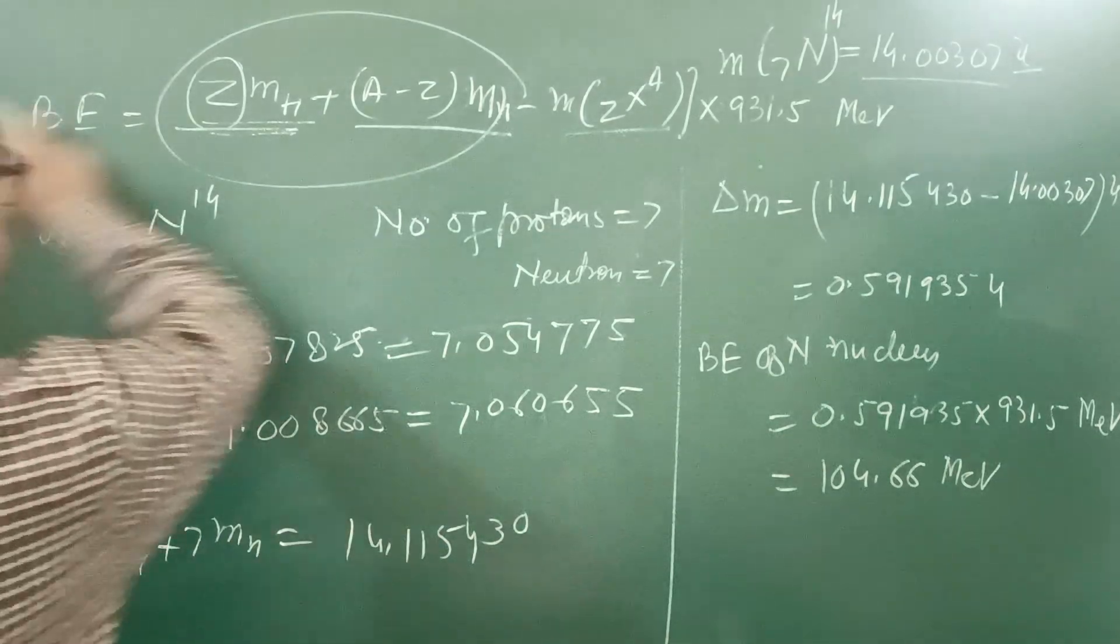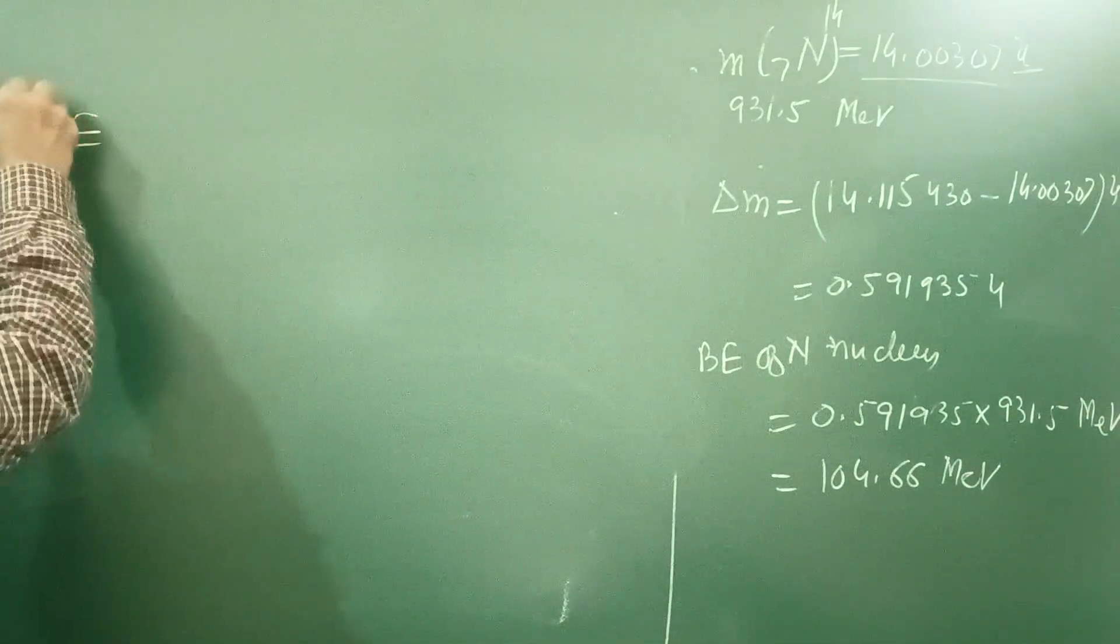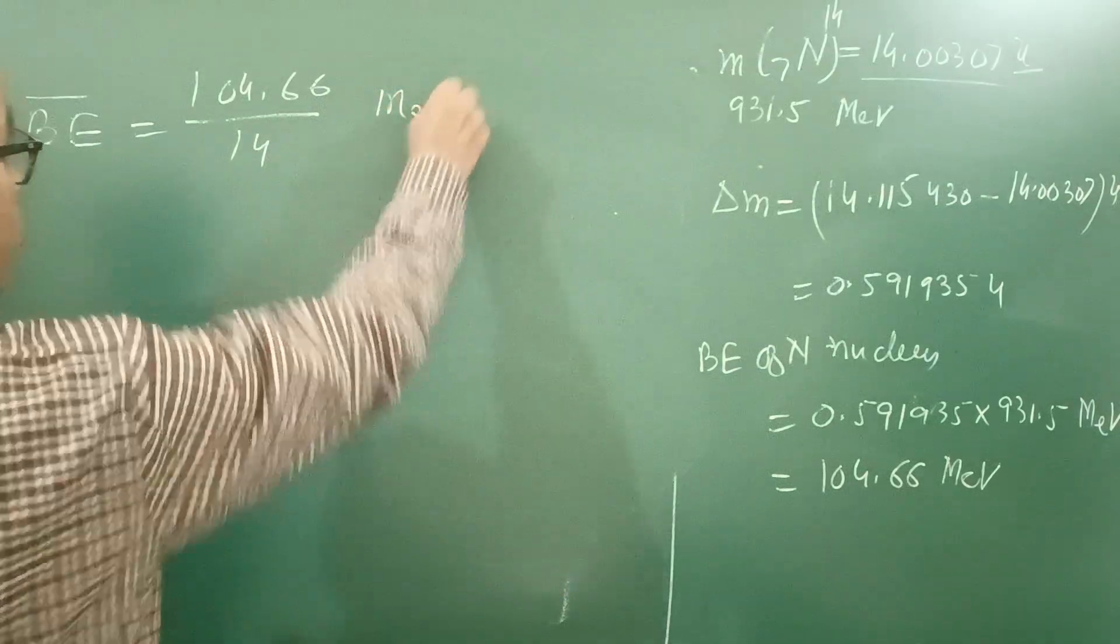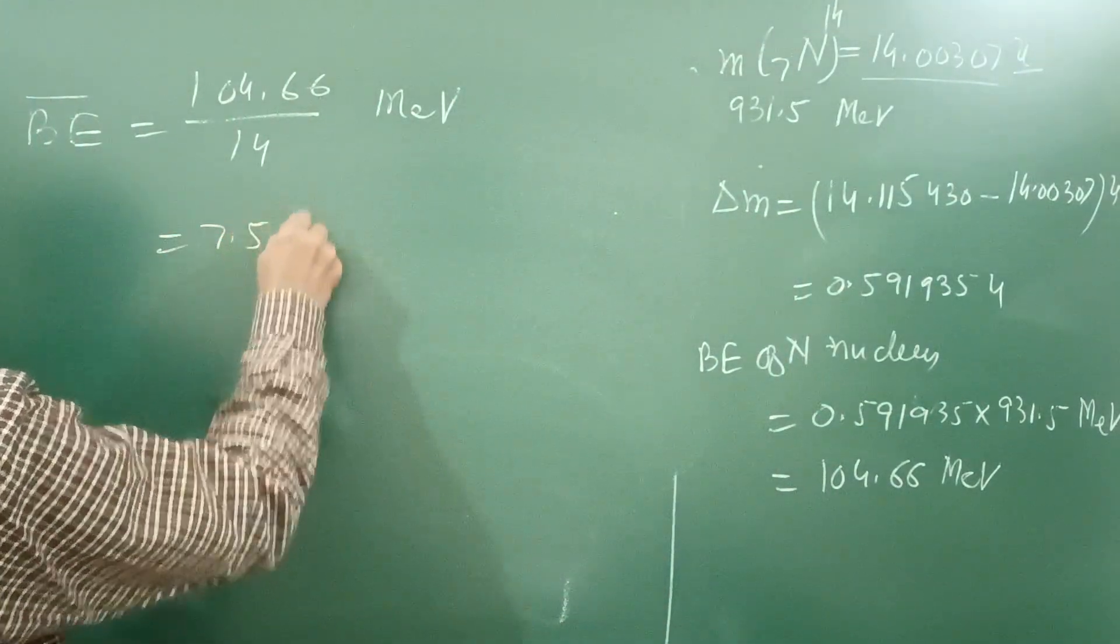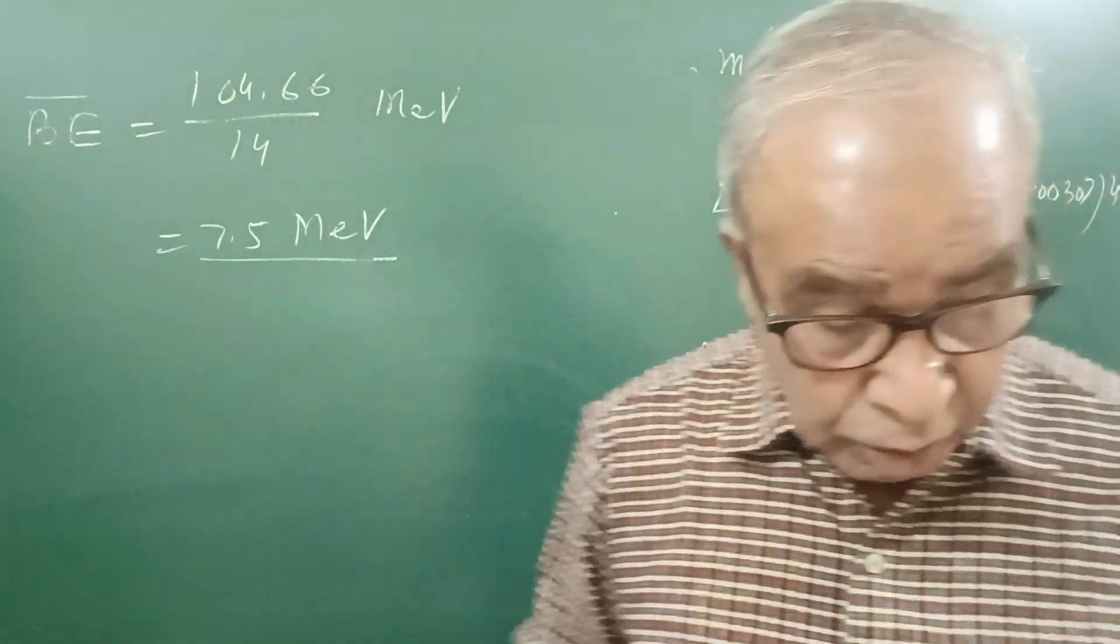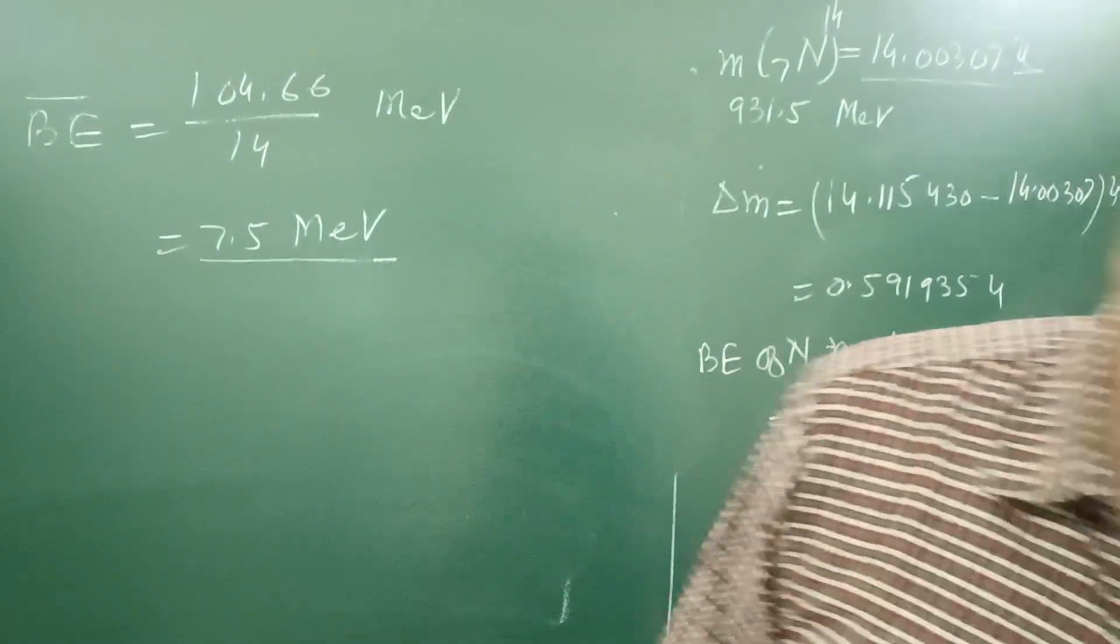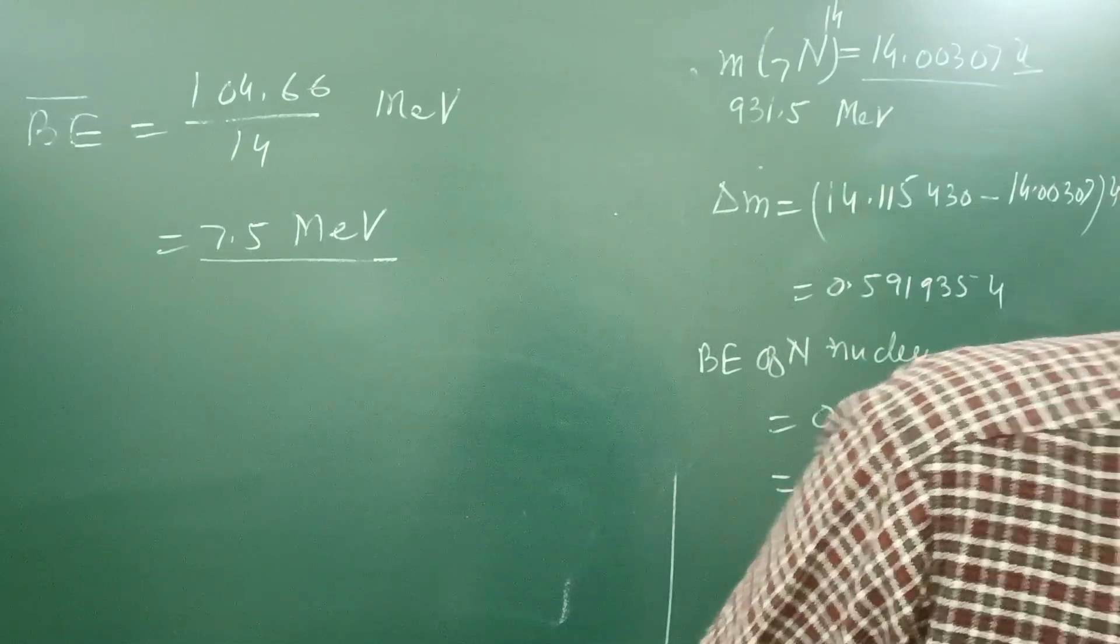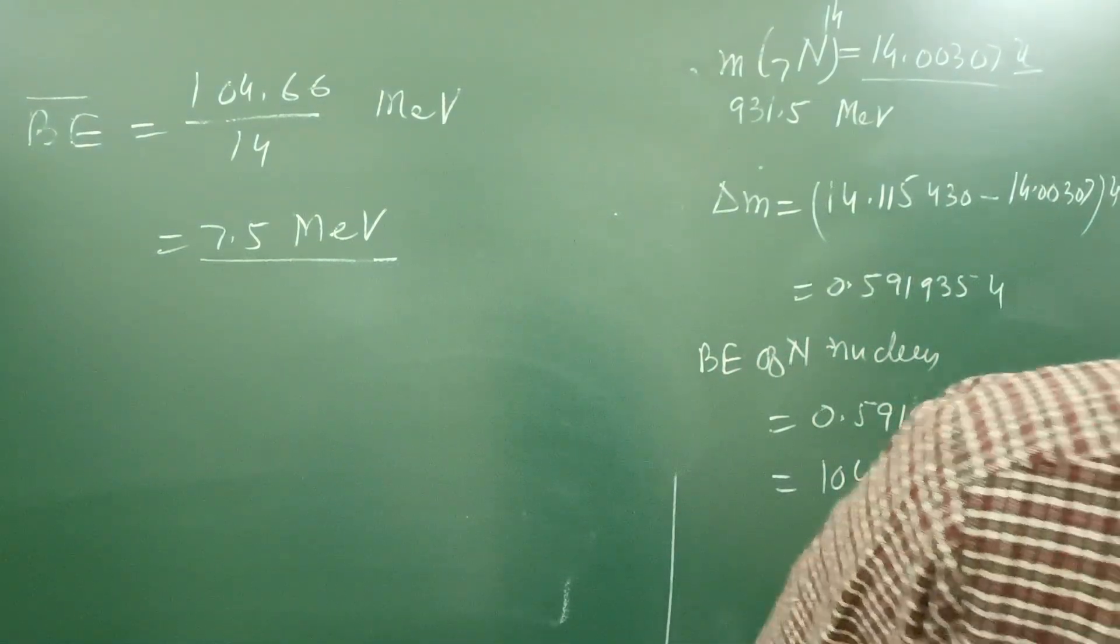Binding energy is 0.11236 times 931.5 MeV. This is a simple question generally asked in the exam, so please do good practice of multiplication. On multiplying we get 104.66 MeV and this is the total binding energy. If you are asked to find binding energy per nucleon, B.E. bar, so B.E. bar is 104.66 divided by 14, the number of nucleons. It comes out to be 7.5 MeV. Generally in board exam you are asked to find binding energy per nucleon.